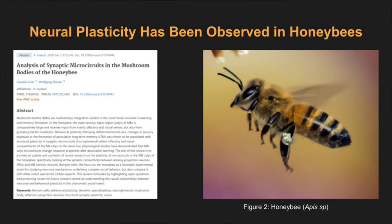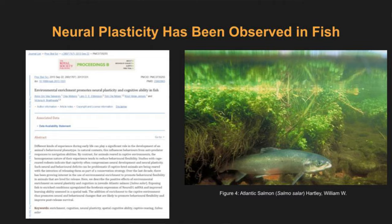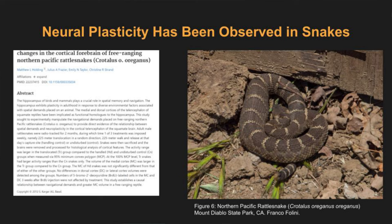Neuroplasticity is not something exclusive to highly intelligent animals. It's been found and observed in honeybees, sea slugs, fish, many mammals — and it's been observed in rattlesnakes. So we do know that it happens in the brain of snakes.